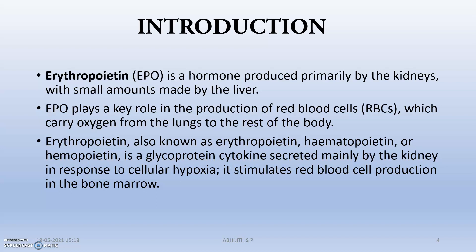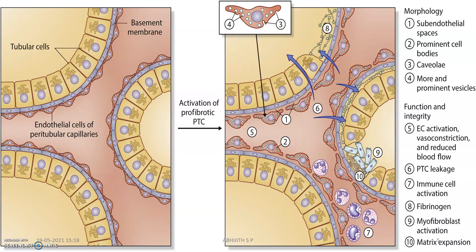Whenever there is hypoxia, the blood will stimulate the kidney to secrete more erythropoietin into the blood. That erythropoietin will be carried to the bone marrow, and there erythropoiesis happens at an alarmed rate. This is actually the endothelial cells of peritubular capillaries — these cells are actually producing the erythropoietin.